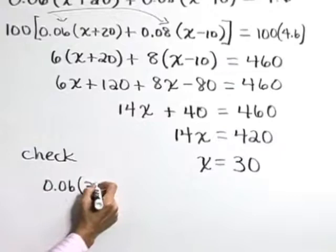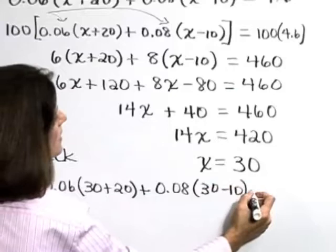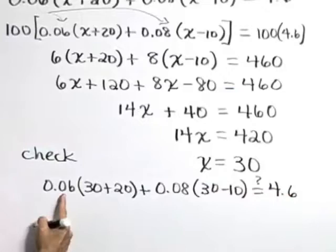...that gives 0.06 times 30 plus 20 plus 0.08 times 30 minus 10. Is that equal to 4.6?